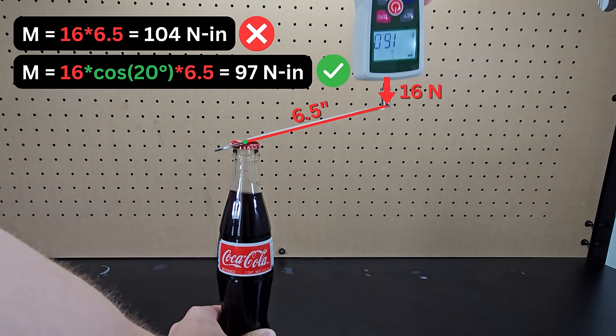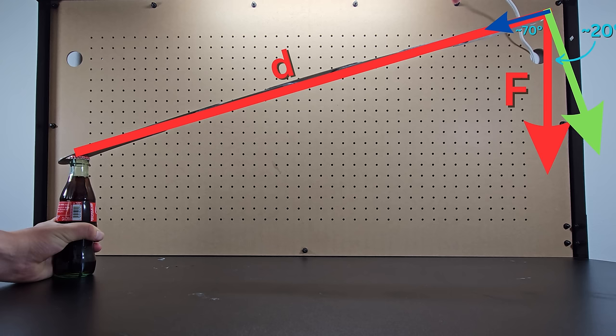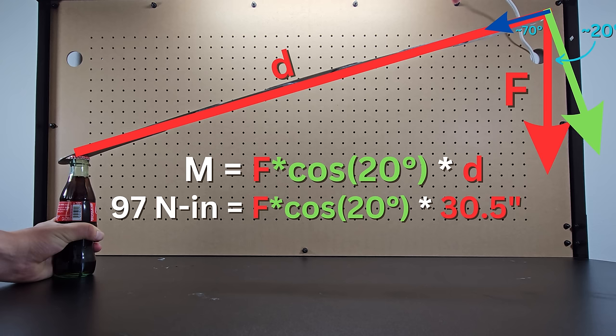After this adjustment, the required moment to open the bottle is now about 97 newton inches. For the longer 31-inch bottle opener, if you do the same calculation but this time solve for the force needed to achieve the required moment of 97 newton inches, you can get a completely wrong answer.